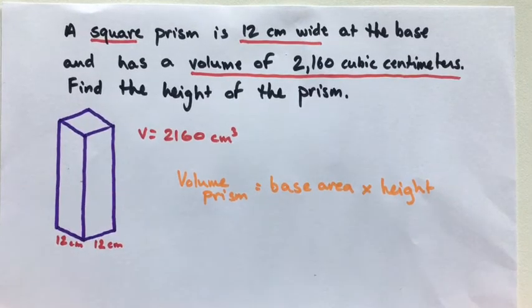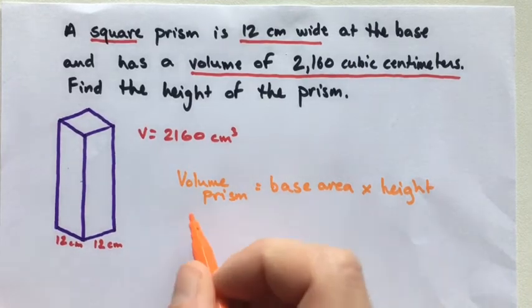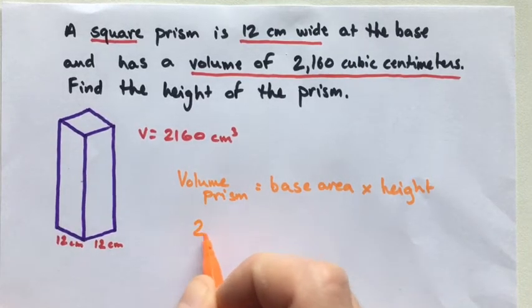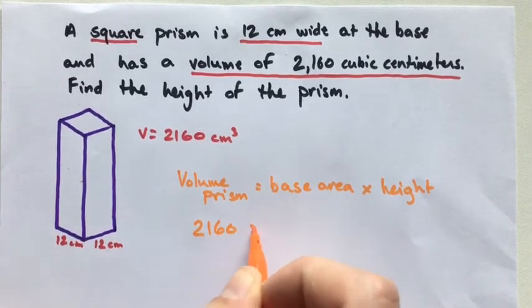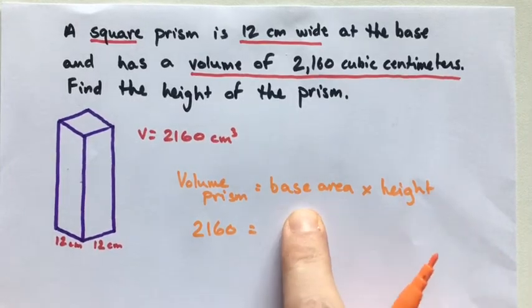Now what do we know here? We know that the volume is 2160, so we can fill that in. 2160 is equal to, let's look at my base area.